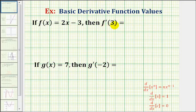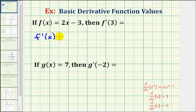Before we determine f prime of 3, we need to find our derivative function. If f of x equals 2x minus 3, then f prime of x is going to be equal to 2 times the derivative of x. The derivative of x is always equal to 1, so it gives us 2 times 1, or 2.